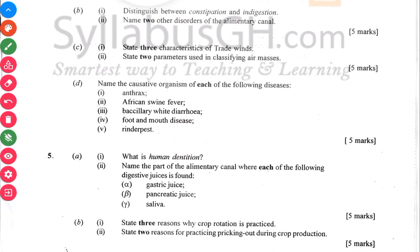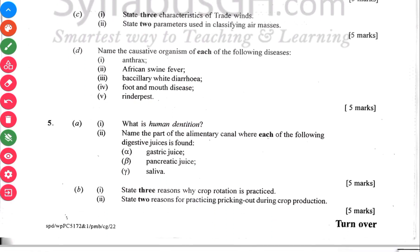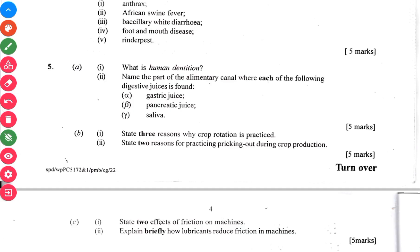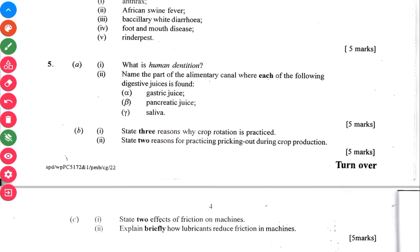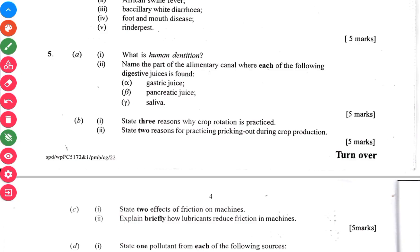Another topic — diseases — I was just talking about it and you can see it here again. Go to your diseases again. What is human dentition? Name the parts of the alimentary canal where the following can be found: gastric juices in the stomach, pancreatic juices in the pancreas, saliva in the mouth.